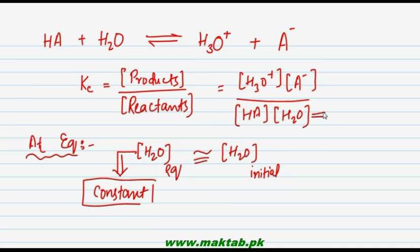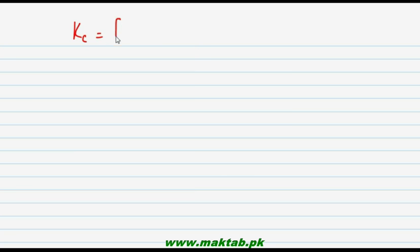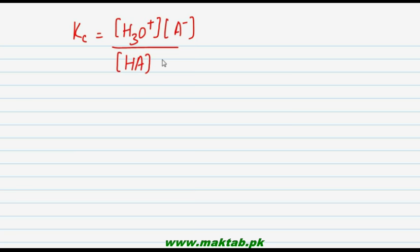The concentration of water is in excess — we have it in excess quantity, so we consider this concentration constant. So Kc equals the concentration of H₃O⁺ into A⁻, divided by the concentration of acid HA, into the concentration of water. Since we have said water's concentration is constant...